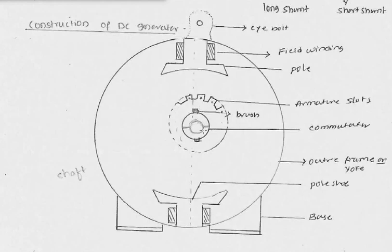On the shaft, we have a commutator segment mounted. On top of the commutator segments, we have a brush resting on the commutator segment. The commutator segment forms the terminal of the DC generator — when it generates electricity, we get the power from the two brushes, one will be positive and one will be negative.